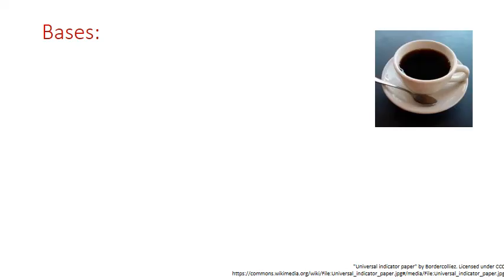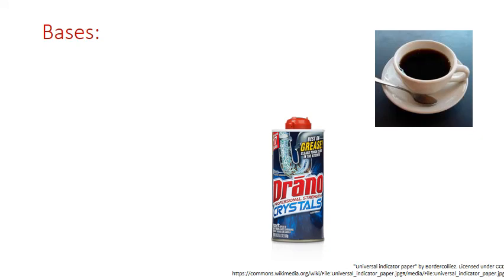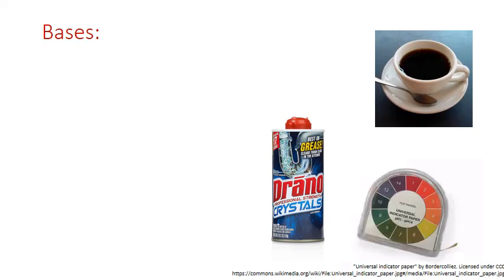Bases, as a class of compound, also have some distinct qualities. They taste bitter — caffeine and other alkaloid compounds like those found in coffee are weak bases. Bases react with organic matter; Drano contains a powerful base, sodium hydroxide. And bases, like acids, turn certain dyes different colors. Where acids turn litmus red, bases tend to turn the dyes in litmus green to blue.